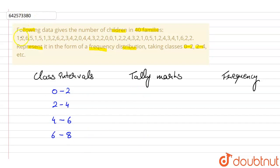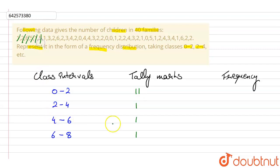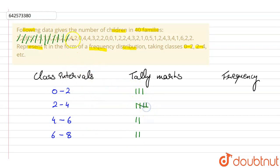Now we fill in the tally marks table. Starting with the data values: 1 goes in 0 to 2; 2 goes in 2 to 4; 6 goes in 6 to 8; 5, 5, 5 go in 4 to 6; 1 goes in 0 to 2; 3 in 2 to 4; 2 in 2 to 4; 6 in 6 to 8; 2 in 2 to 4; 3 in 2 to 4; 4 in 4 to 6; 2 in 2 to 4.